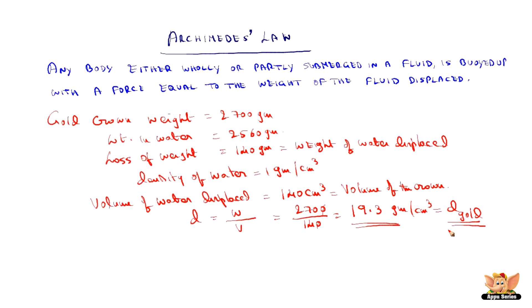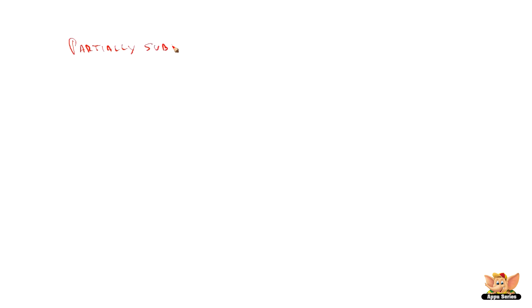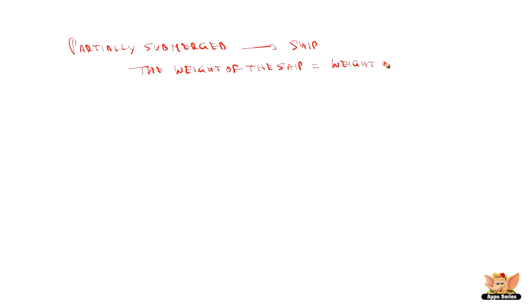This is how the story goes — how Archimedes proved his law. One more example we will see, because Archimedes talks in his law about even the partially submerged case — any body either wholly or partially submerged. The best example for a partially submerged body using Archimedes' Law is a ship in water. In this case, the weight of the ship is equal to the weight of the water it displaces. This is the principle on which ships sail on the ocean.